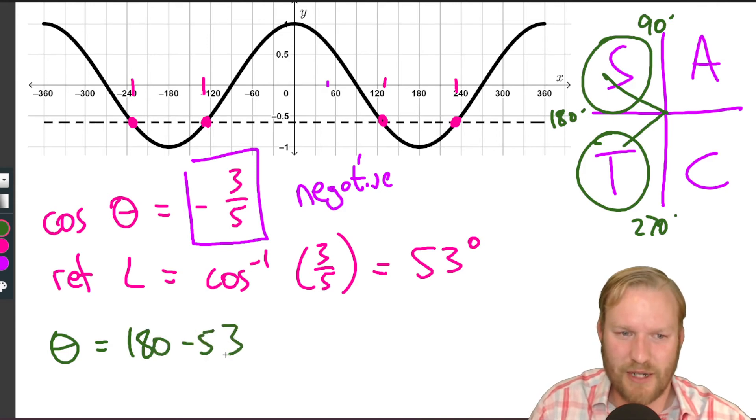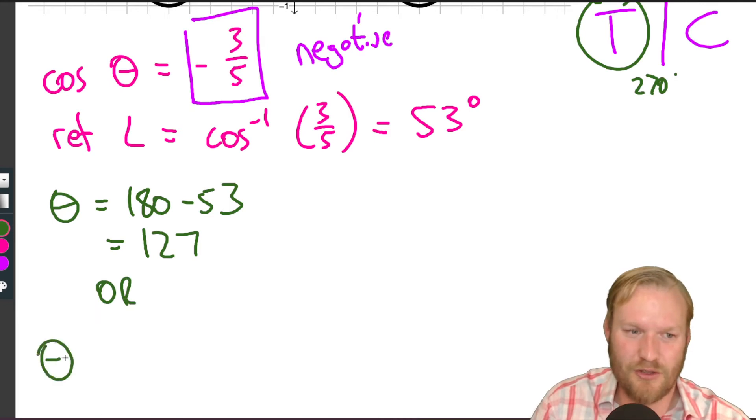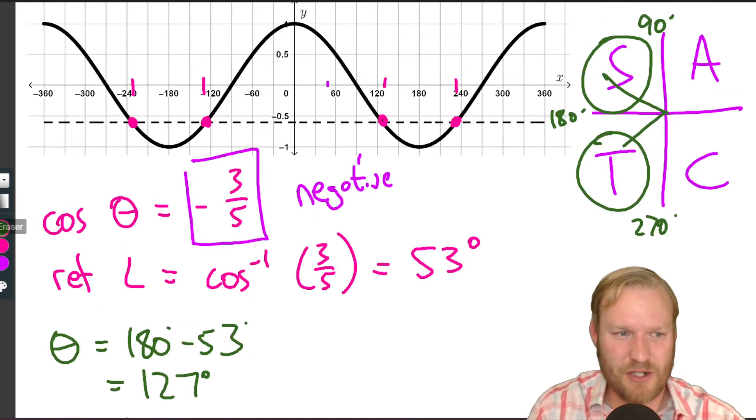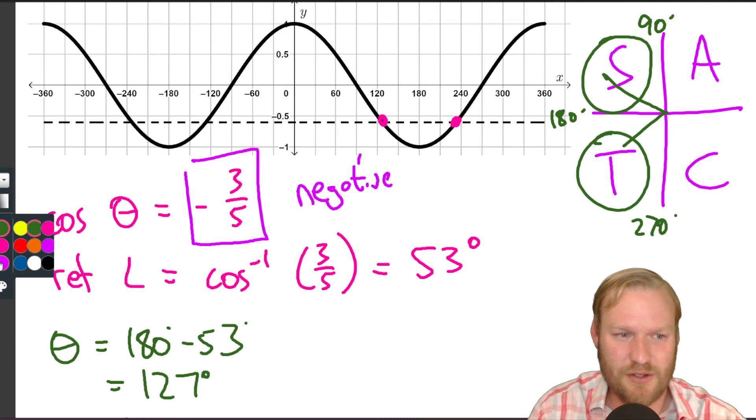Our first angle θ equals, well it would have been 180 minus 53, and that gives us 127. And our second solution would have been 180 plus 53, and that gives us 233 degrees. That matches the picture nicely. We've got our two solutions, and that relates to those two dots. Here's our 127 and here's our 233.